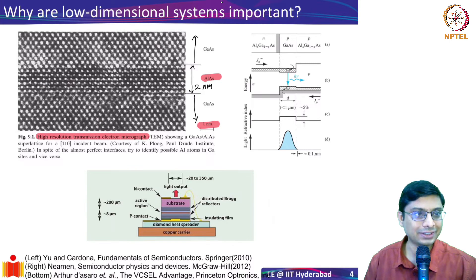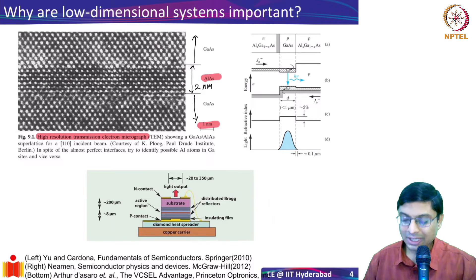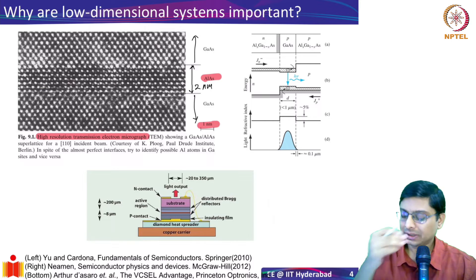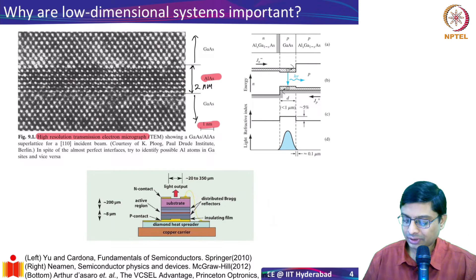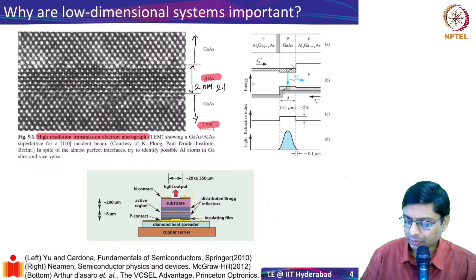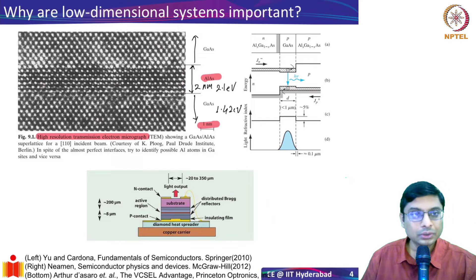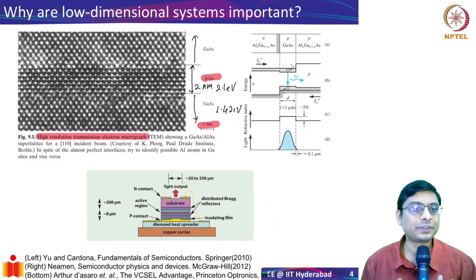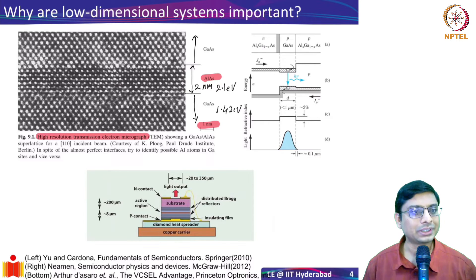The dots are larger in gallium arsenide because gallium is a much larger atom than aluminum. Now, aluminum arsenide has a band gap of about 2.1 eV and gallium arsenide has a band gap of 1.42 eV. So we can make structures with different band gaps in this sort of supercell.